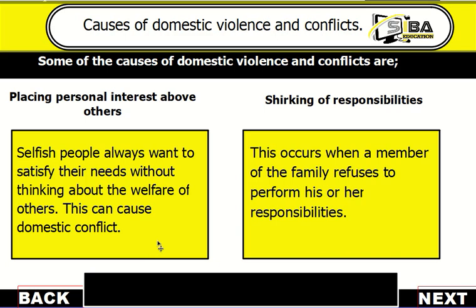So when this happens it also causes domestic conflict. The next one is shirking responsibility — when one or a family member refuses to perform his responsibilities as expected, it also brings conflict in the various homes.